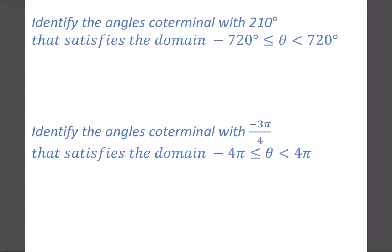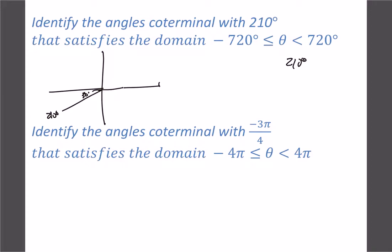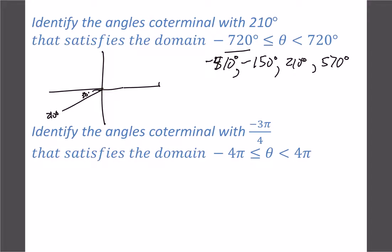For co-terminal angles: starting at 210 degrees (which is 30 degrees past 180), add 360 to get 570 degrees for one full extra revolution. Going backwards: 210 minus 360 gives negative 150, and minus 360 again gives negative 510. So the four co-terminal angles within two revolutions are 210, 570, negative 150, and negative 510.